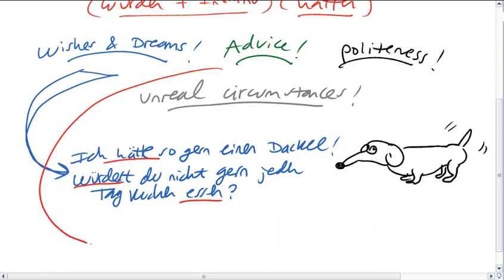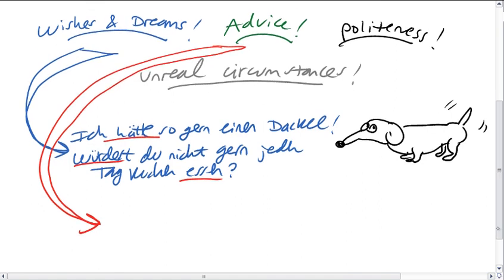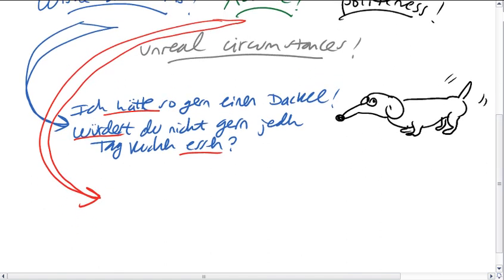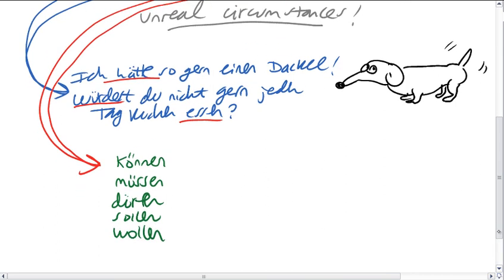But let's talk about advice. Advice. Ratschläge. So to talk about advice with the Konjunktiv 2, we need to do some work with modal verbs. And so let's talk about what they look like in the Konjunktiv 2. So we have, and this is just infinitive, können müssen. This is just a review of the infinitive of modal verbs. Dürfen sollen. Wollen.